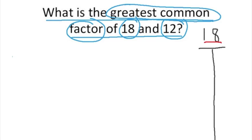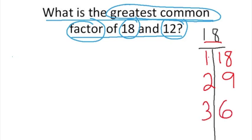So what two numbers can we multiply together that will give us 18? Starting with our smallest factor, we know that 1 times 18 will give us 18. We also know that 2 times 9 will give us 18, and we also know that 3 times 6 will give us 18. So the factors of 18, listed in red, are 1 and 18, 2 and 9, and 3 and 6.